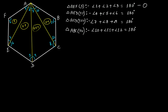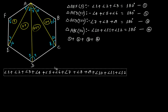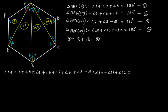Let this be equation 1, this be equation 2, this be equation 3, this be equation 4. Adding equations 1 plus 2 plus 3 plus 4 together, if you add the LHS together, this is equal to 180 degrees plus 180 degrees plus 180 degrees plus 180 degrees, that is 4 times 180 degrees, that is 720 degrees.